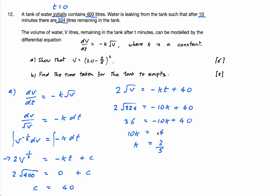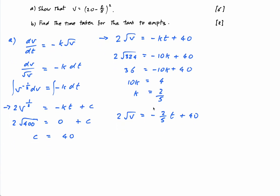Okay, so nearly there. I now have 2 times root V is equal to minus K, which is minus 2 fifths. That's T plus 40. That's going back to here. That's going back to here, but subbing in 2 fifths for K.